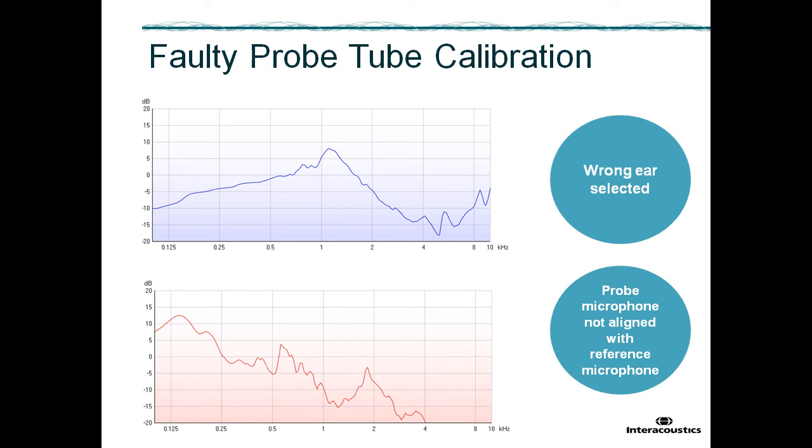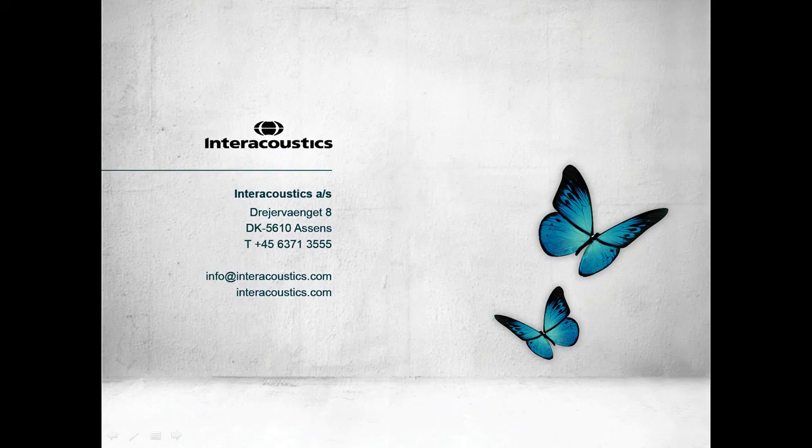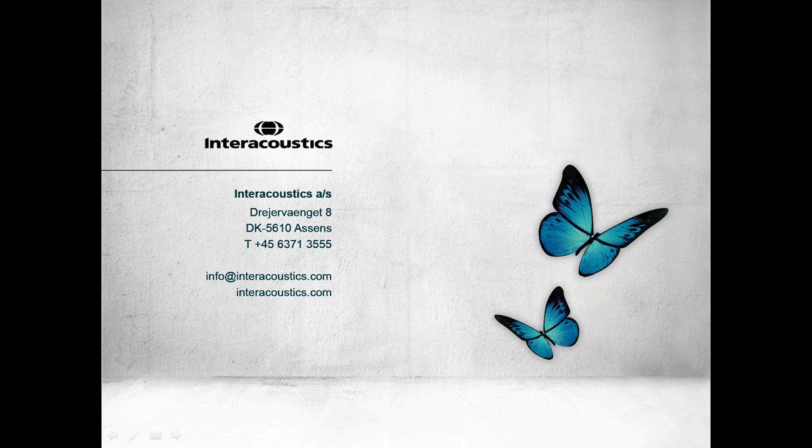If a mistake has been made or the calibration appears faulty, then the tube calibration must be repeated, which can be done by pressing the tube calibration button. This concludes this quick guide video on performing a probe tube calibration.